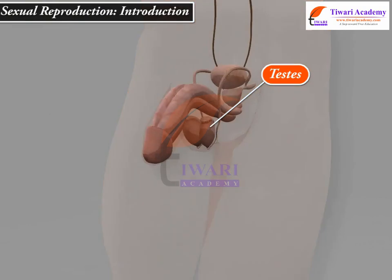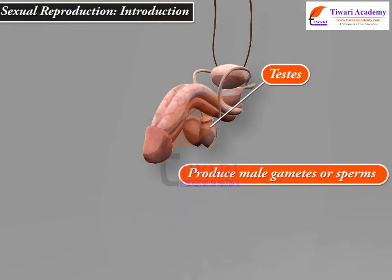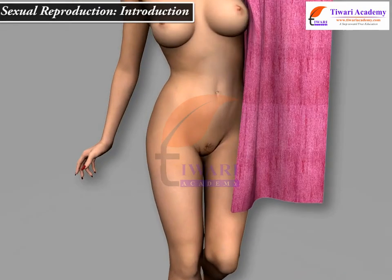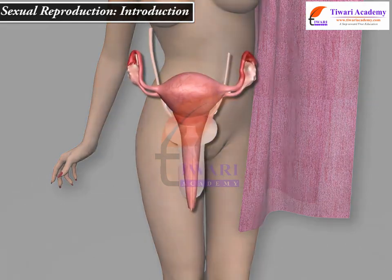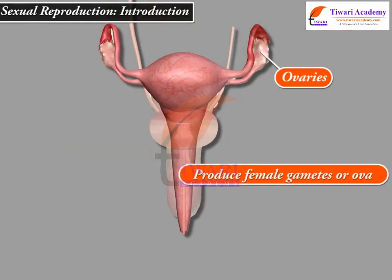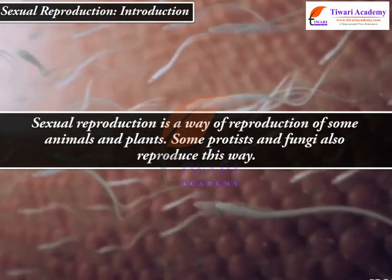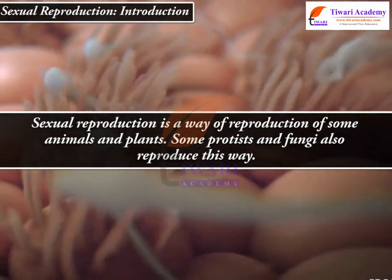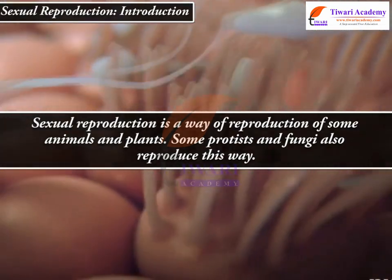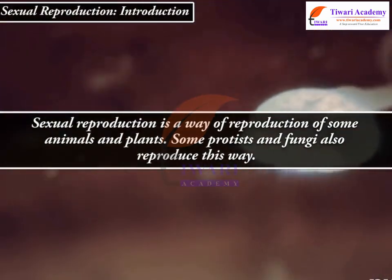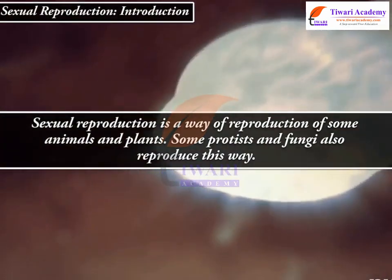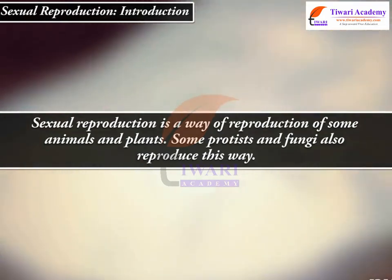The testes in males produce male gametes or sperms, and the ovaries in females produce female gametes or ova. Sexual reproduction is a way of reproduction in some animals and plants. Some protists and fungi also reproduce this way.